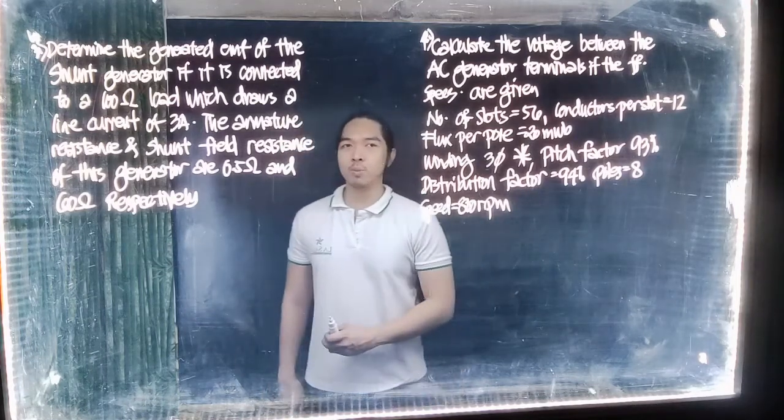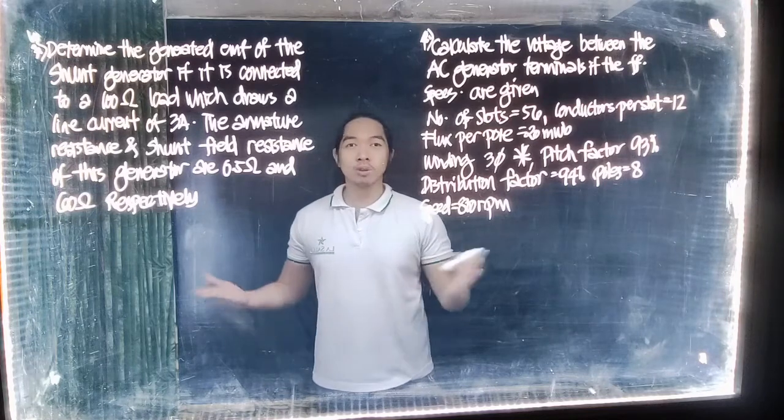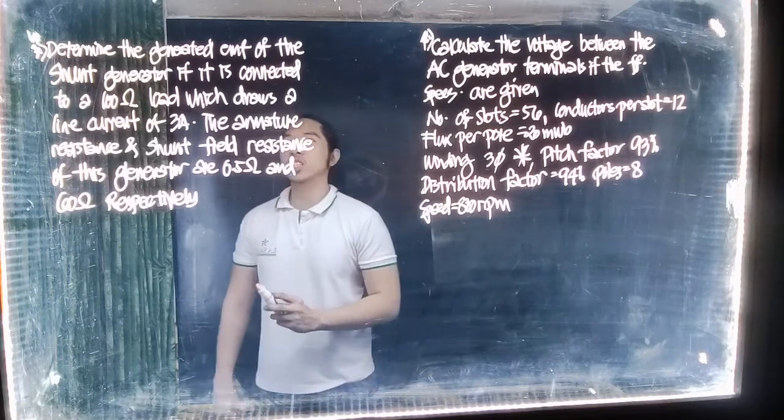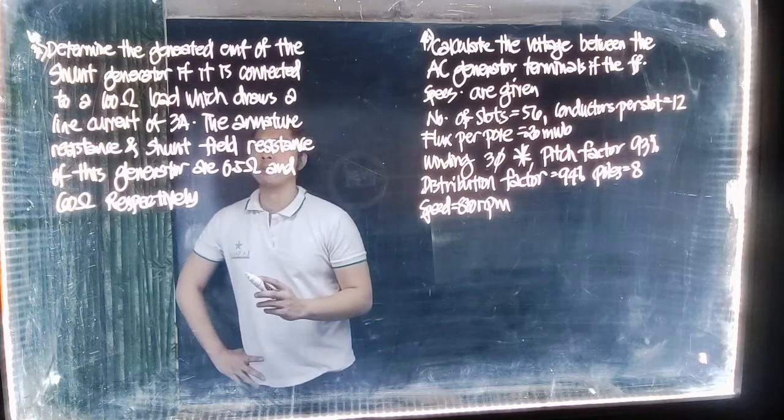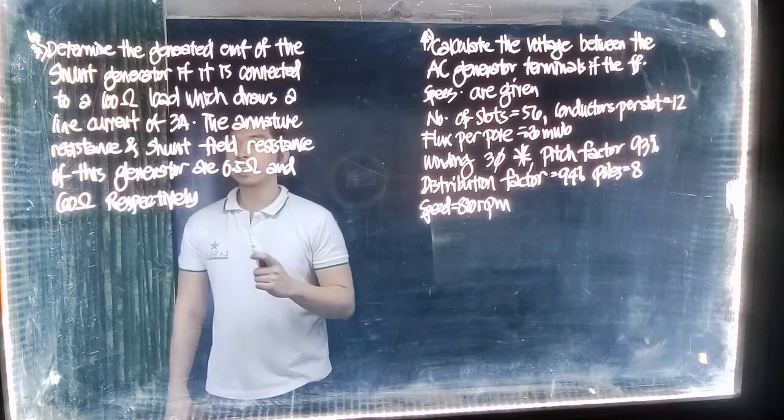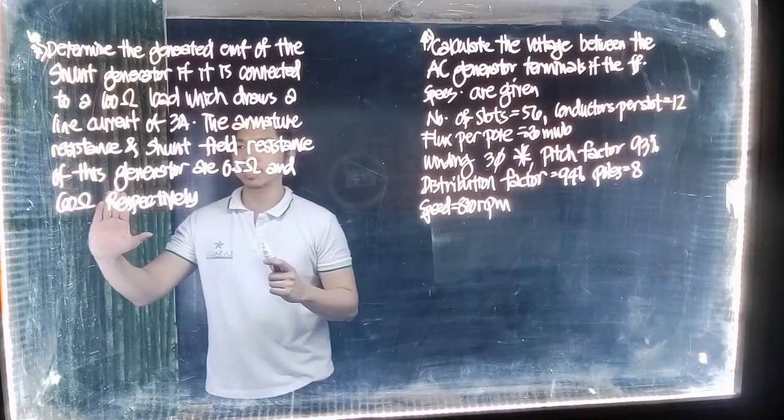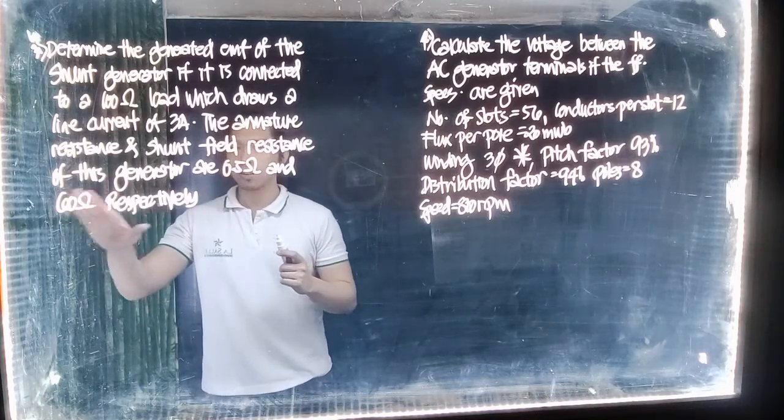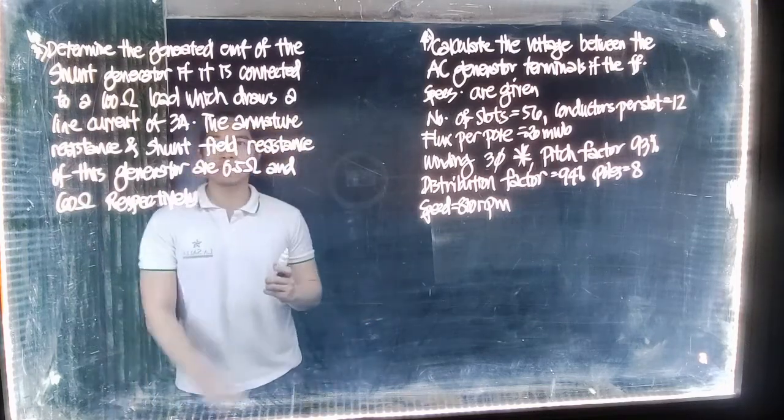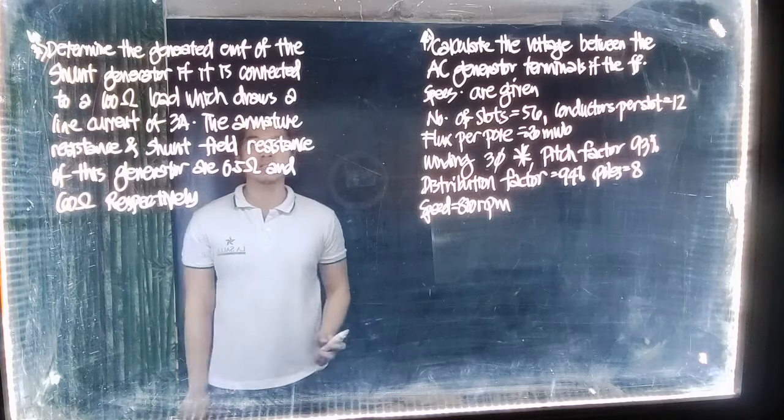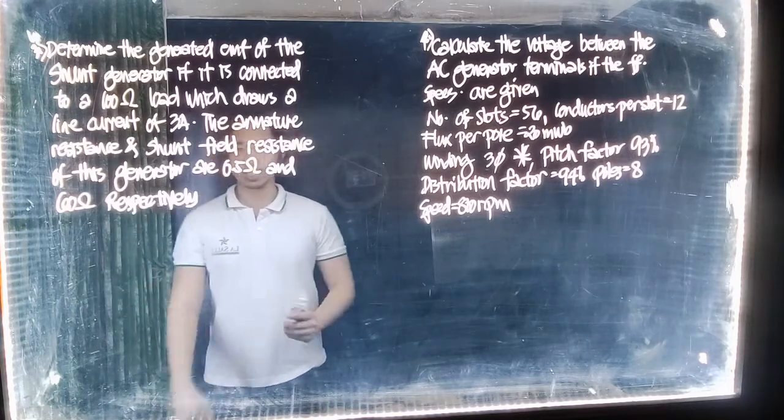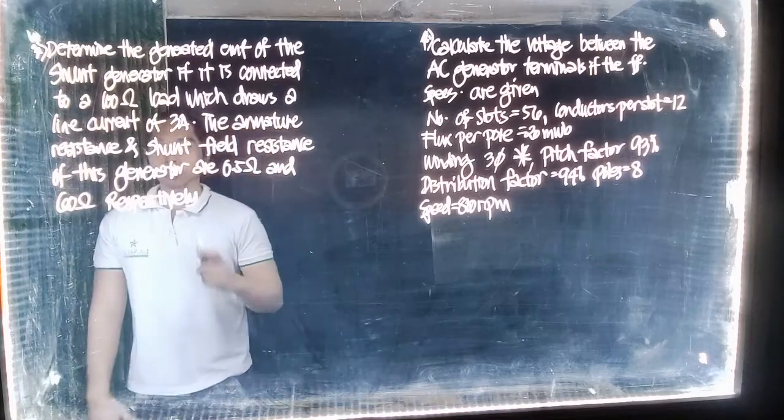So for this particular problem, we have another set of two problems here. We're asking you to determine the generated EMF of the shock generator if it is connected to a 102 ohm loop, which shows a line current of 3 amperes. The armature resistance and shock field resistance of the generator are 1.5 ohm and 6.5 ohm respectively. So how do we solve that? The first thing that we're going to do is draw the circuit.